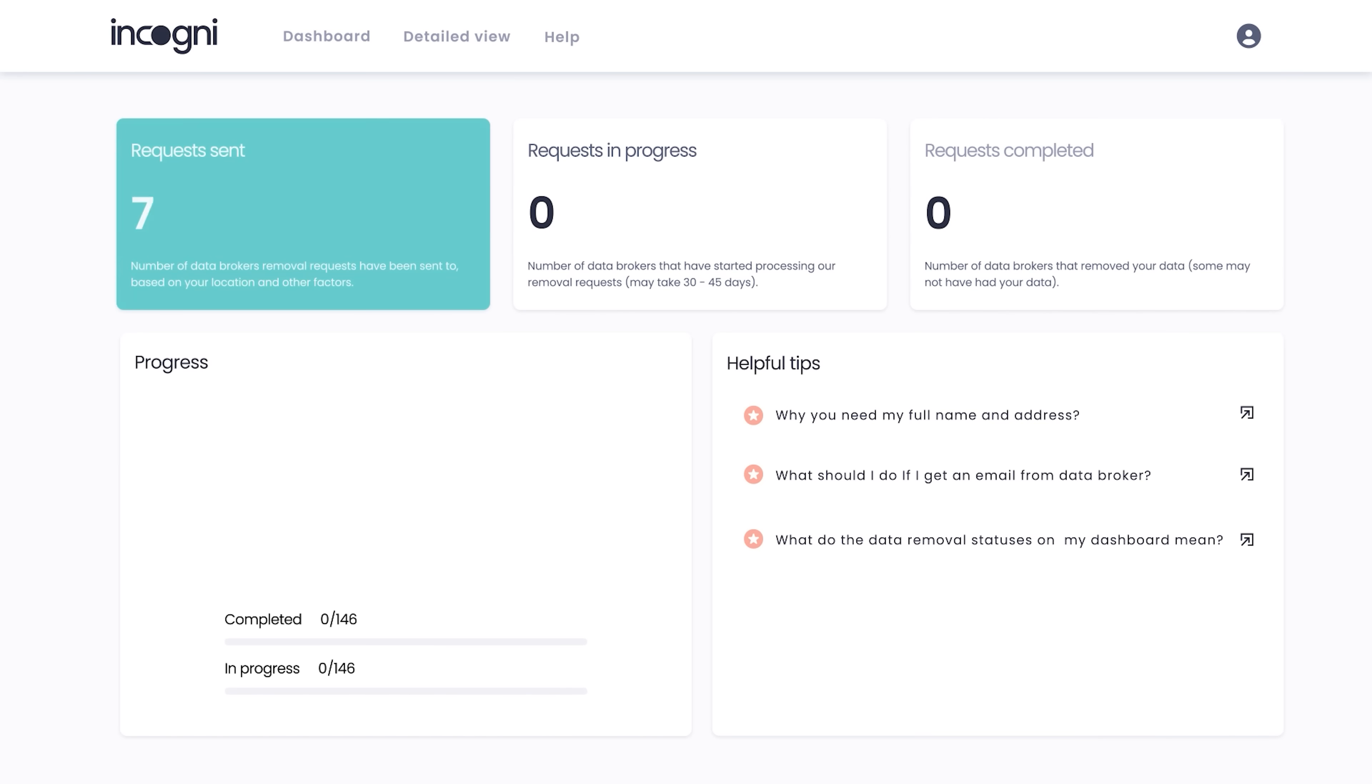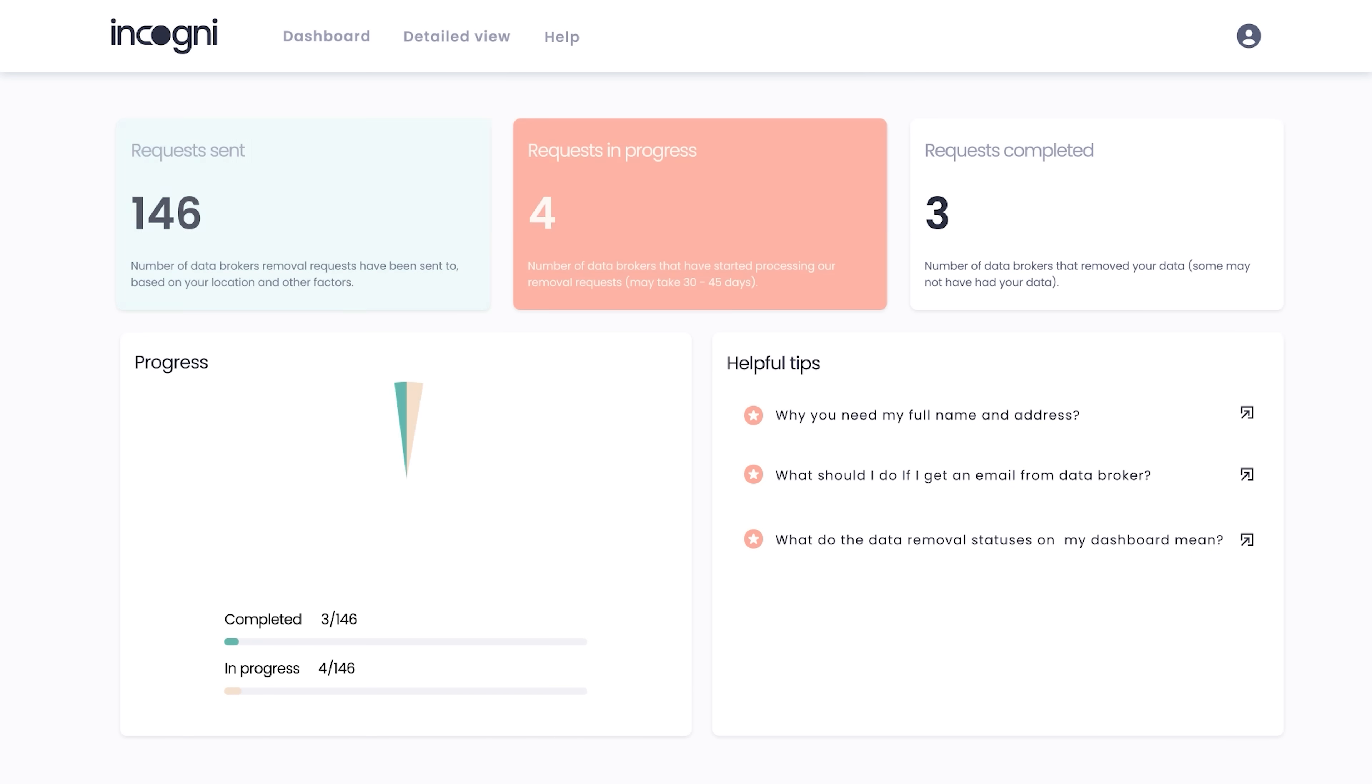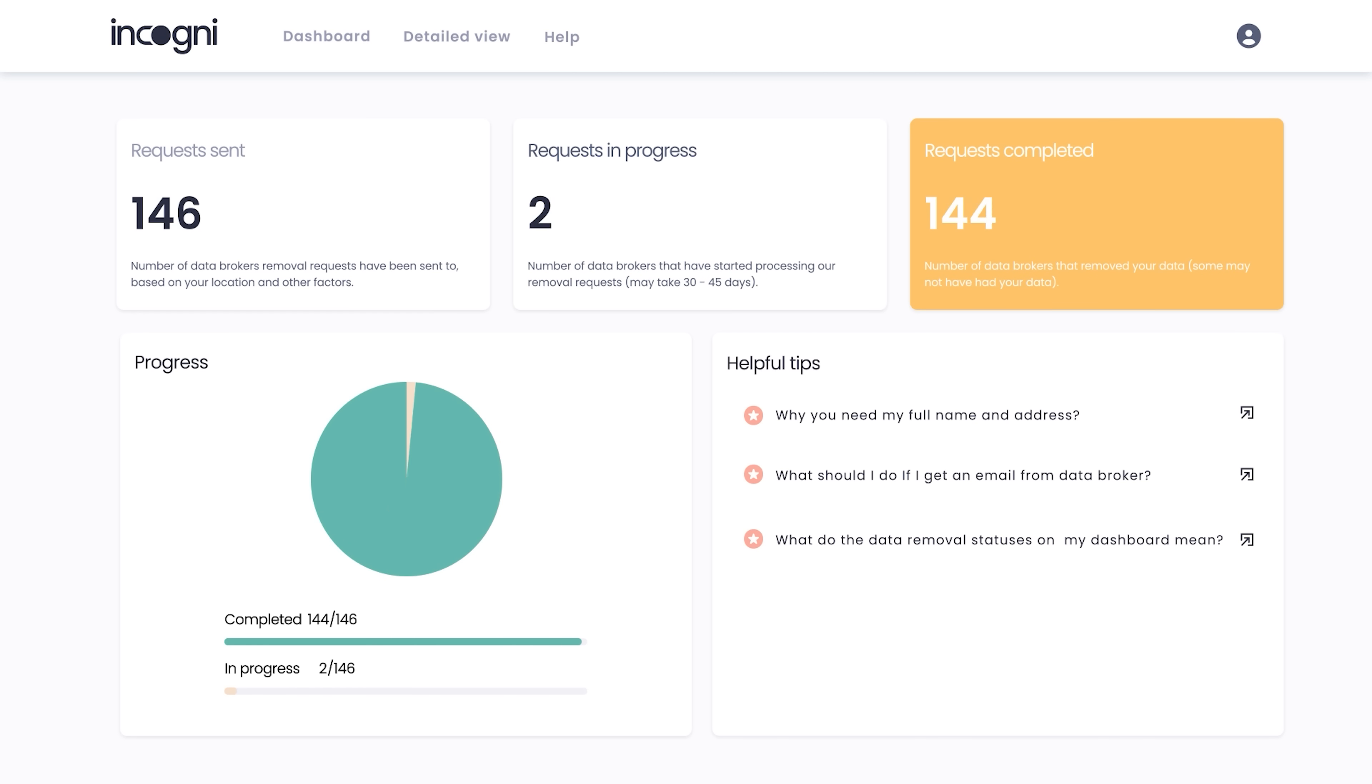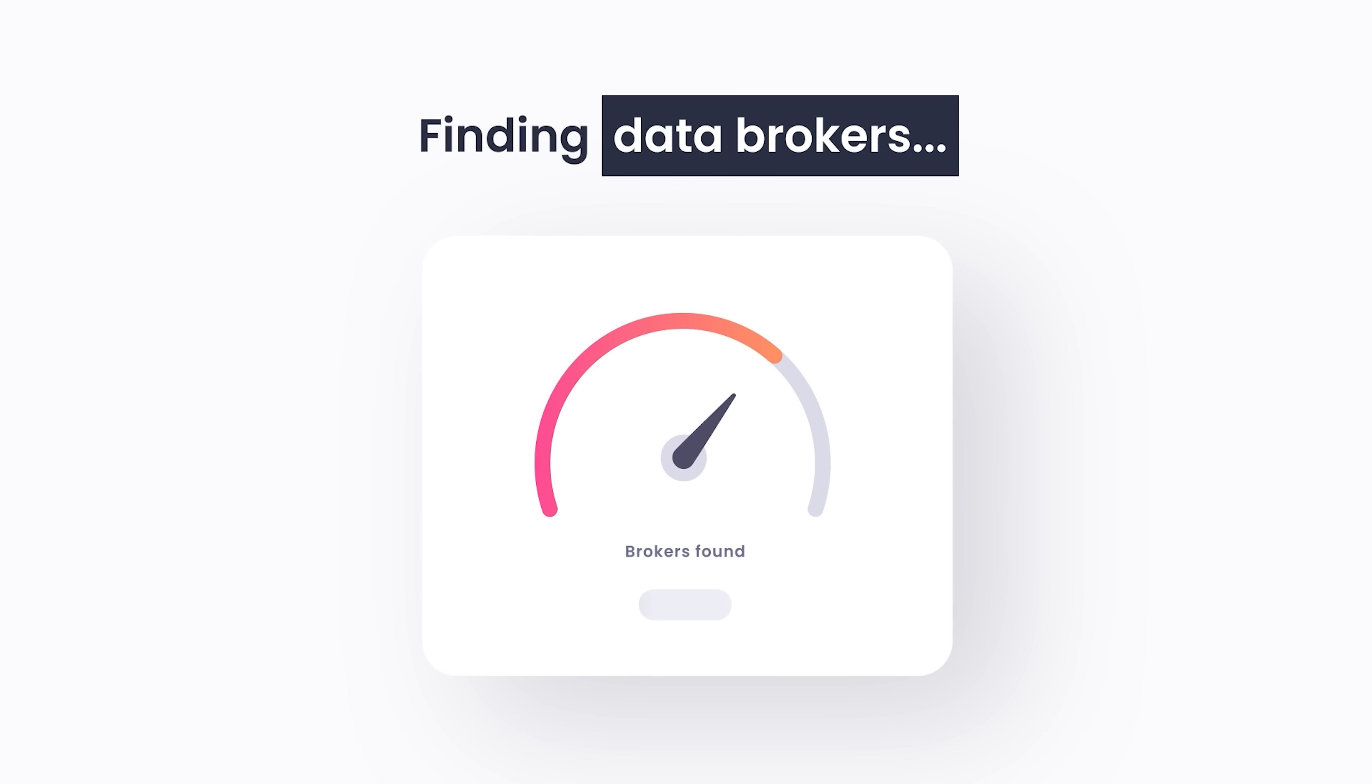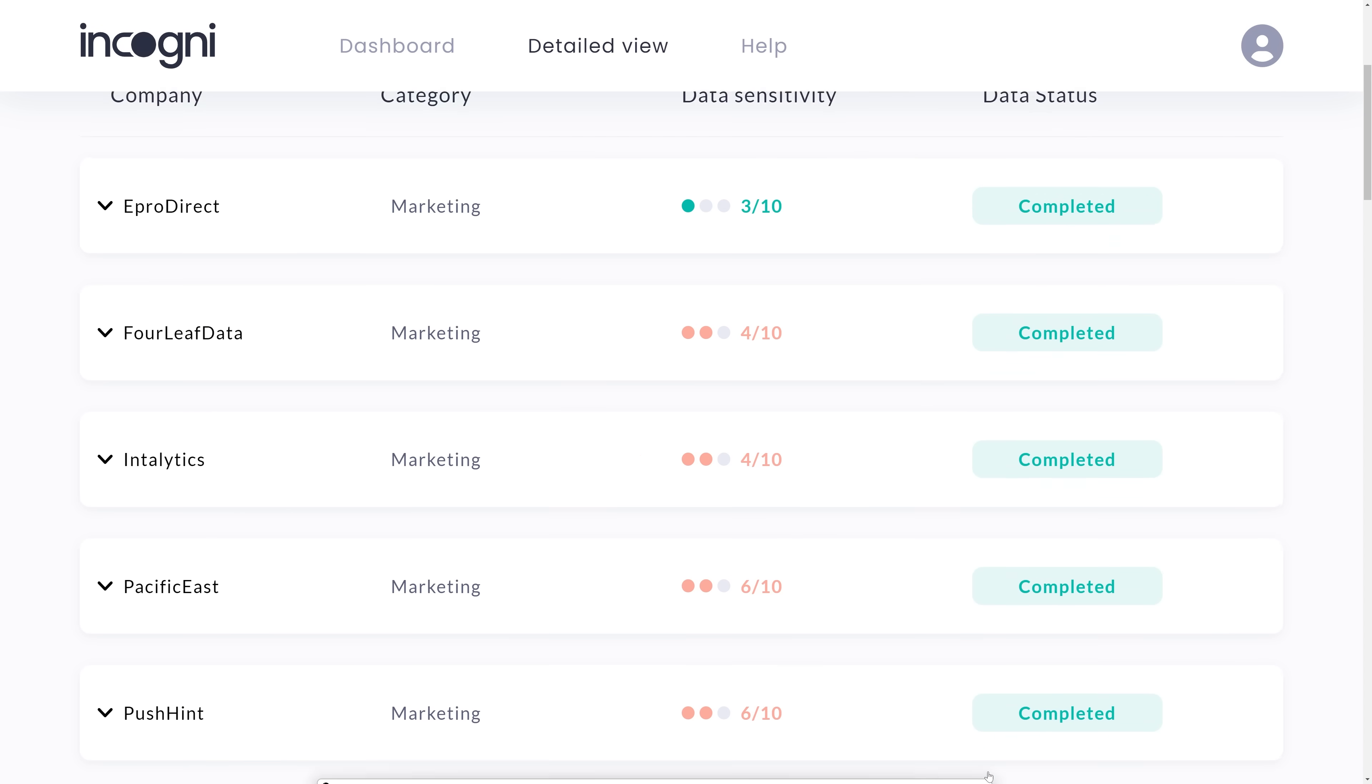What Incogni does is contact all of these different companies in the formal way that they're required to be contacted and ask that they stop selling your data and delete it. And these data brokers are legally obliged to comply with that. You could, in principle, contact these companies yourself, but there are hundreds of them. So it's almost impossible for an individual to do on their own, but Incogni have automated the process. You can then log in and see the progress.